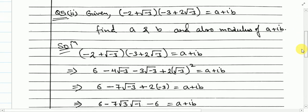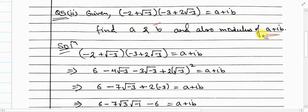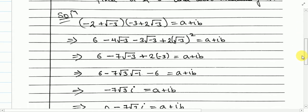In question number 2, we have an expression on the left equal to A + iB, and we need to find the values of A and B. Once we have found A and B, we have to find the modulus of A + iB. While solving this, we don't do anything on the right — we copy it every step. On the left, we simplify into A + iB form.